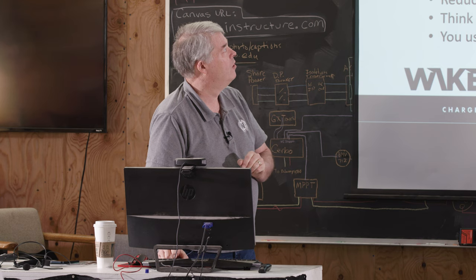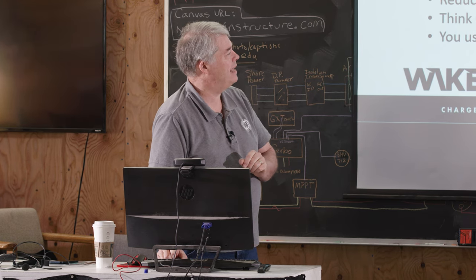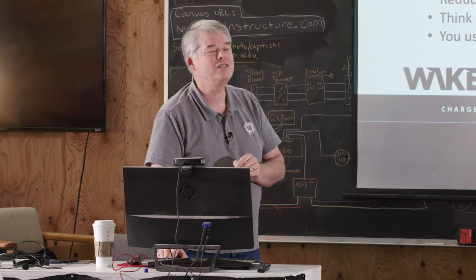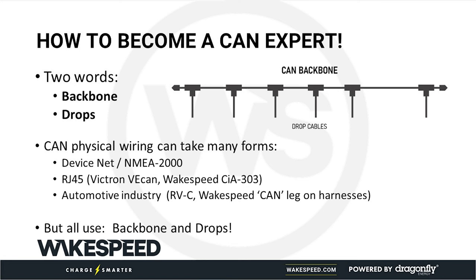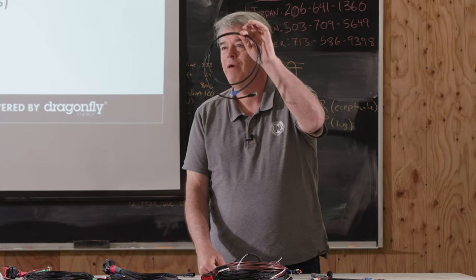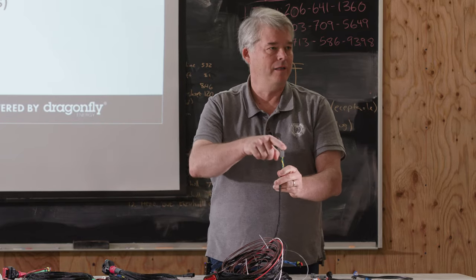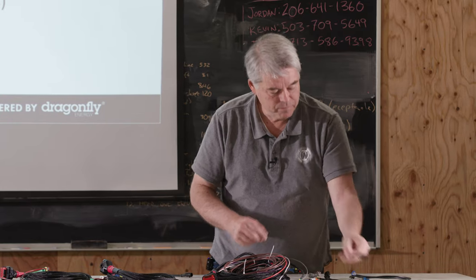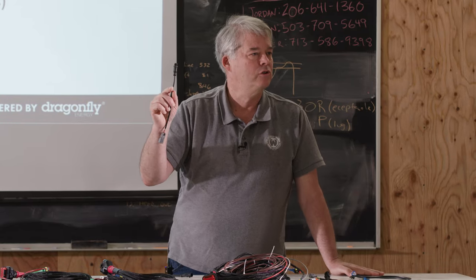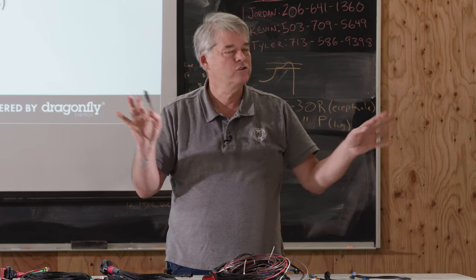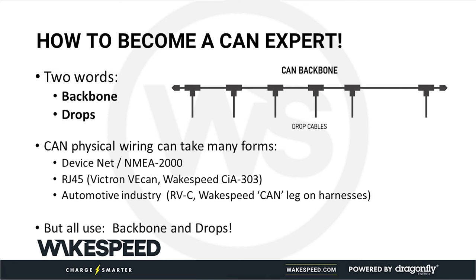I'm going to give you two words that will make you a CAN expert — heads and tails above everyone else. Those two words are backbone and drops. Every CAN network consists of a backbone and drops. There are different wiring systems: one based on RJ45s, one based on DTM common in automobiles, one based on M12s. The connectors and wires are all different, but they all share backbone and drop.